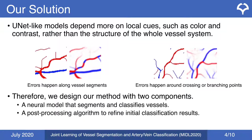Keeping U-Net's shortcomings and these issues in mind, we design our method with two components. First, we design a neural network that segments the vessels and classifies them into arteries and veins. Second, we propose a post-processing algorithm to refine the initial classification results from the previous step.